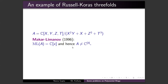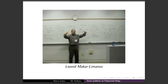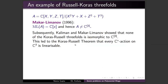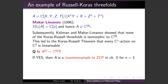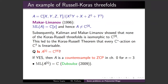It was Makar-Limanov who, at a conference posed by Russell in 1994, claimed that A is not a polynomial ring. He proved that an invariant associated to A — now known as the Makar-Limanov invariant — equals ℂ[x], and hence A cannot be a polynomial ring. Subsequently, Kaliman and Makar-Limanov showed that none of the Koras–Russell threefolds are isomorphic to ℂ³. This led to the Koras–Russell theorem that every ℂ* action on ℂ³ is linearizable.